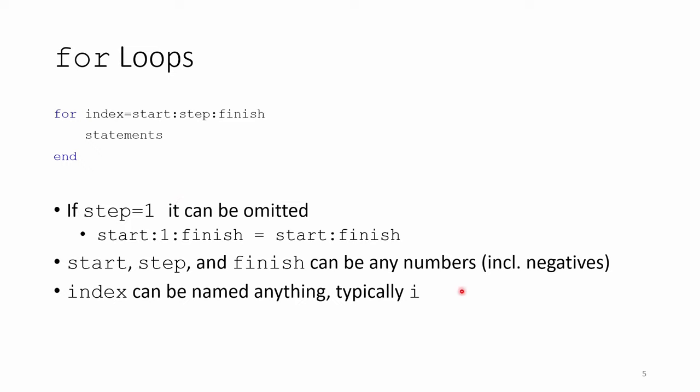Start, step, and finish can be anything we want, including negative numbers and decimals. Index is a variable, so we can call it anything we want. It's most typically named i. But with all variables, you should be as descriptive as possible. If you're working with complex numbers in a for loop, you should probably avoid naming the index variable i to avoid any confusion with the imaginary number i.